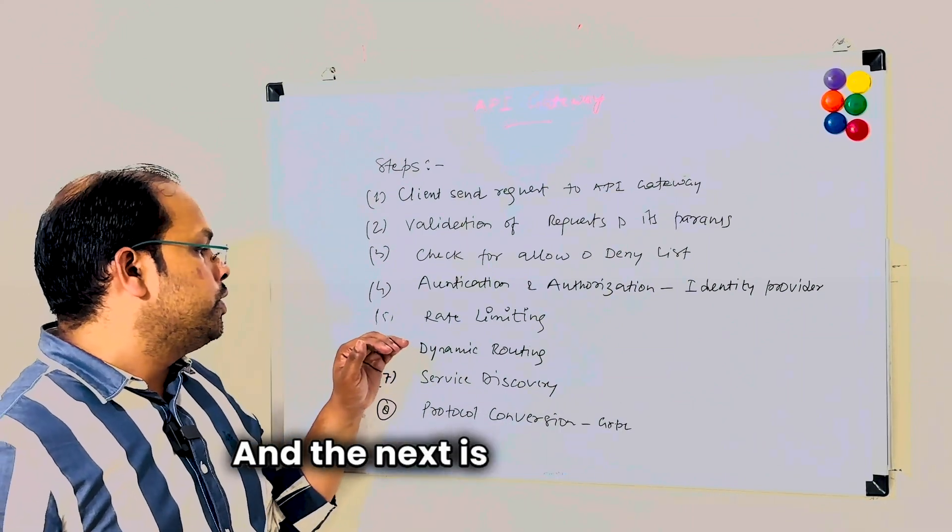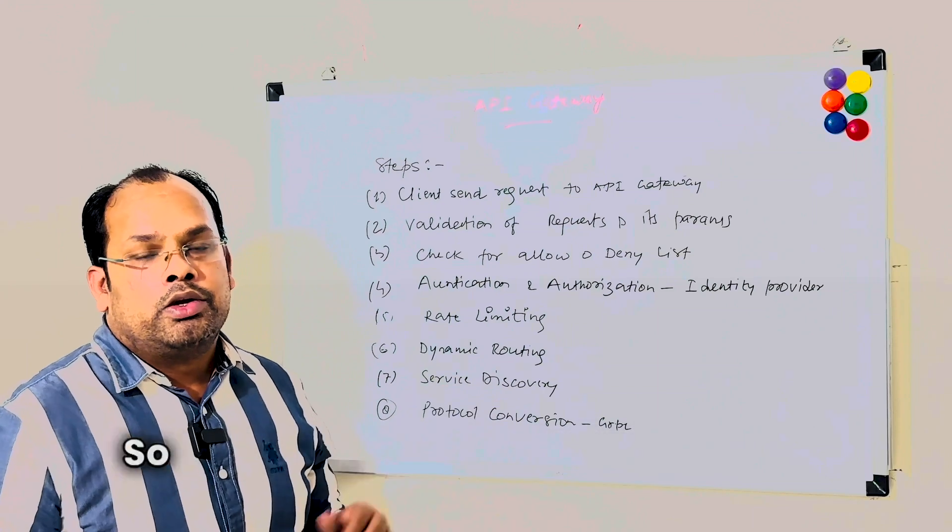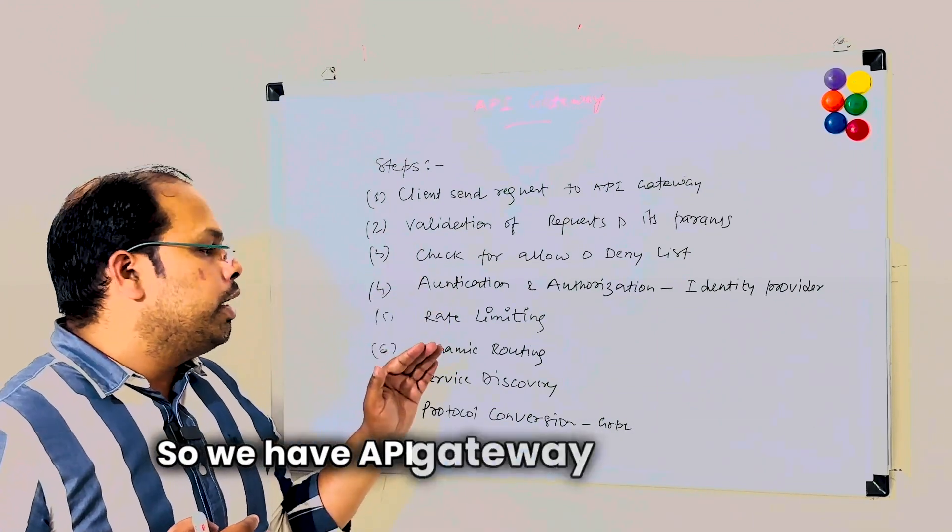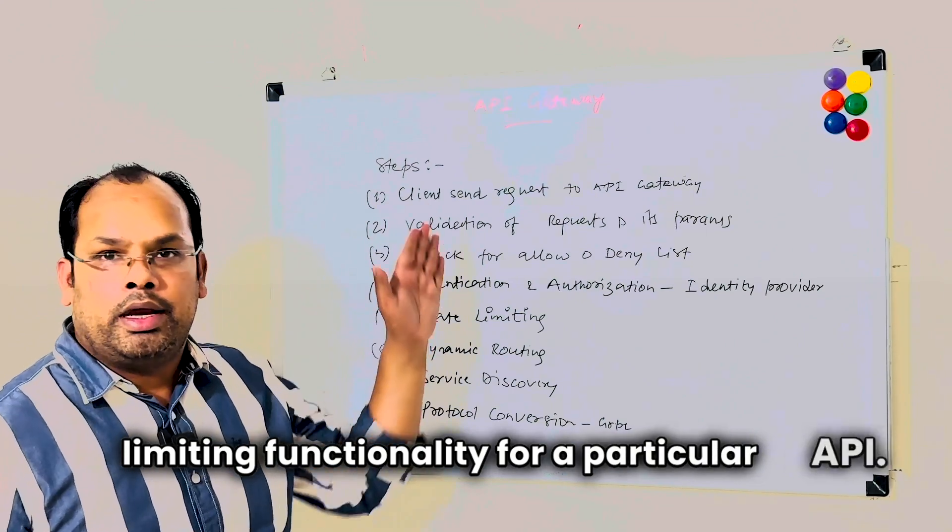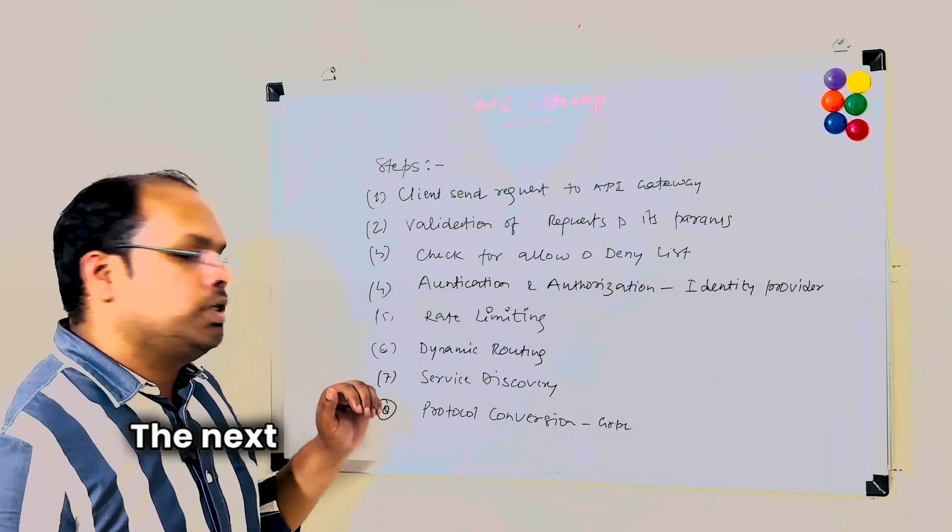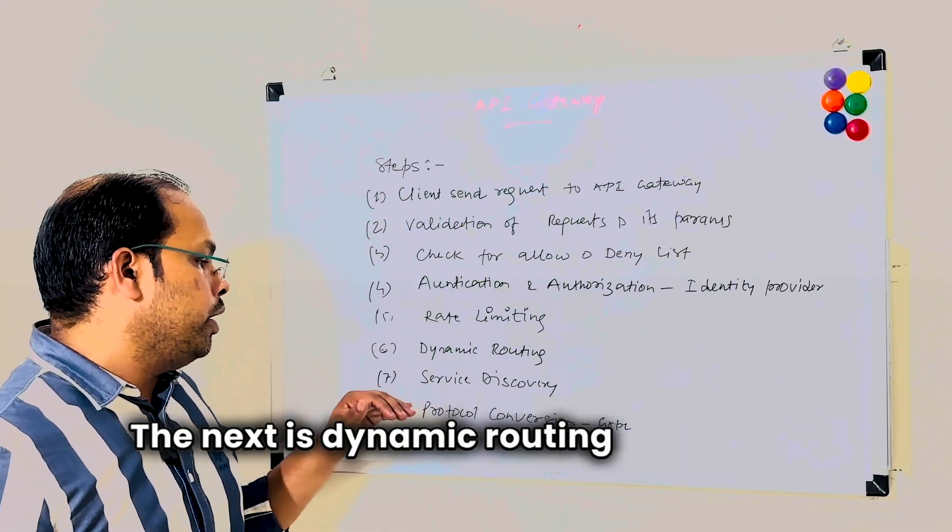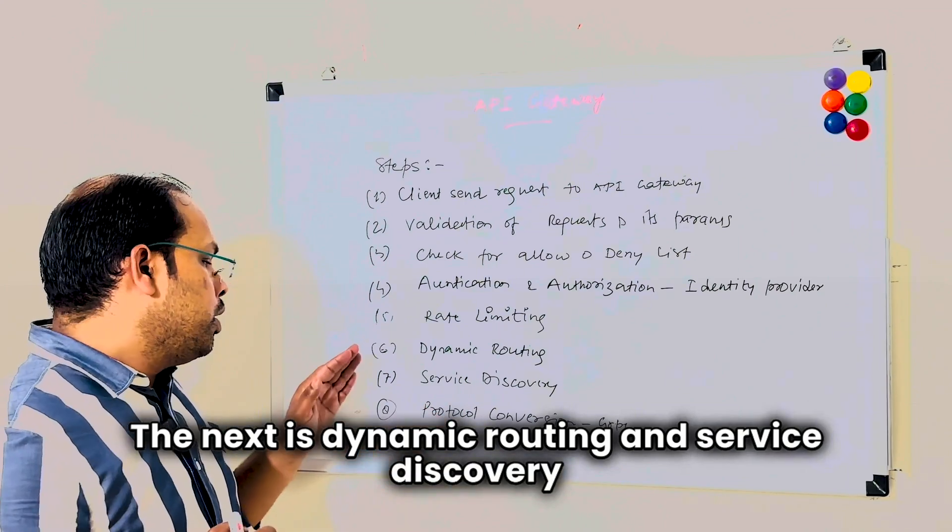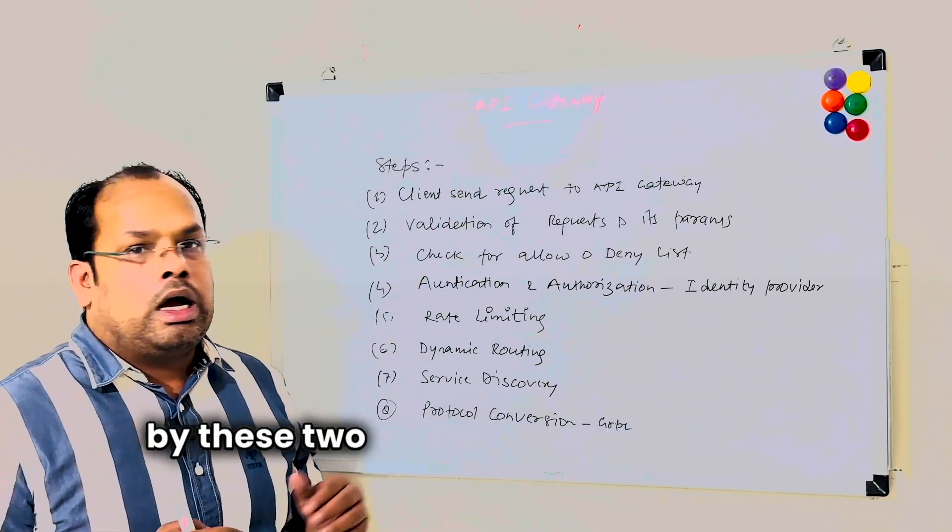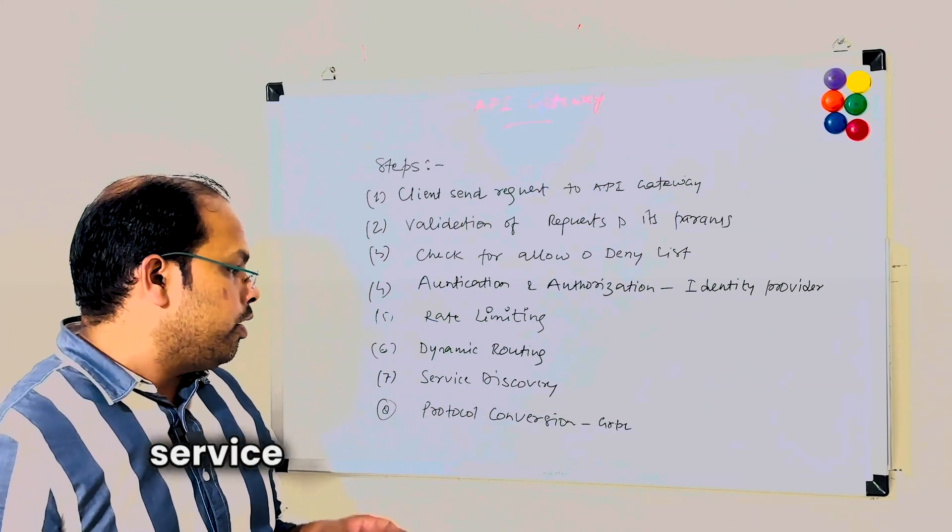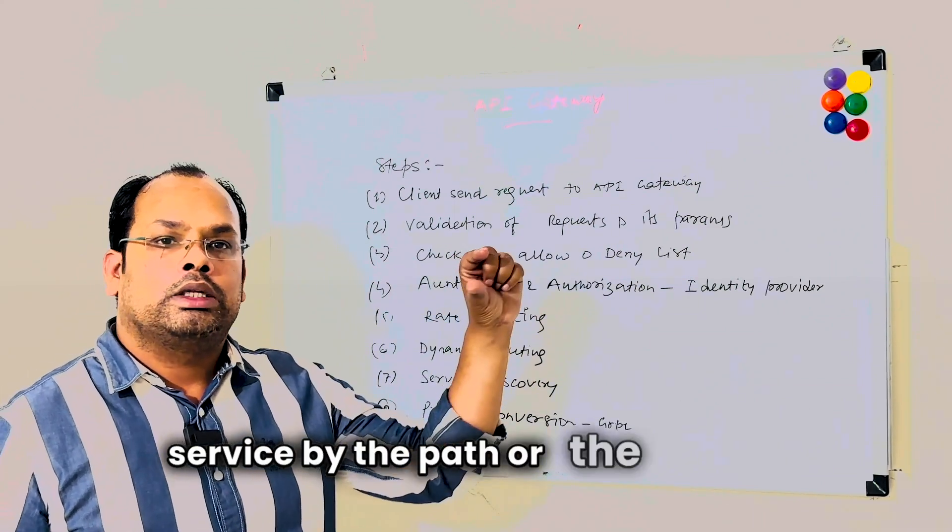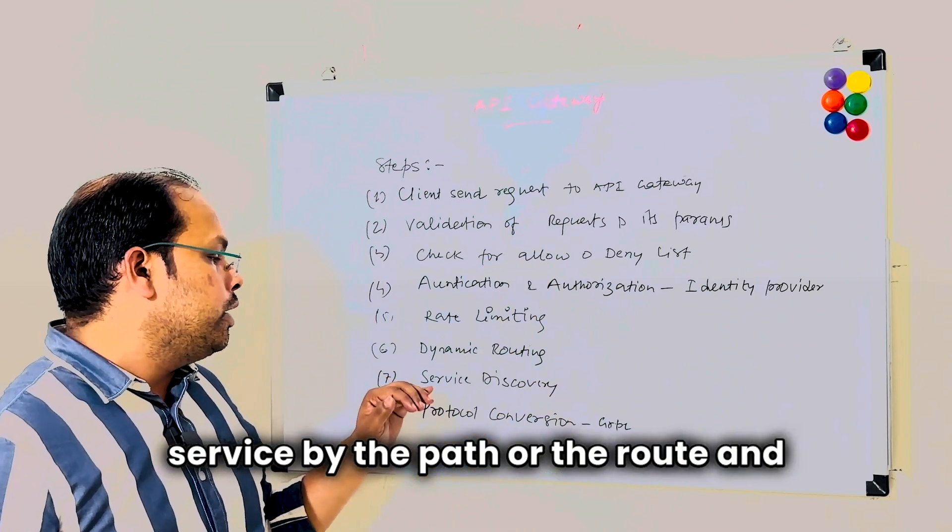The next is rate limiting. API Gateway provides rate limiting functionality for particular APIs. The next is dynamic routing and service discovery. By these two, API Gateway identifies the backend service by the path or the route and basically sends requests to the actual backend microservices.